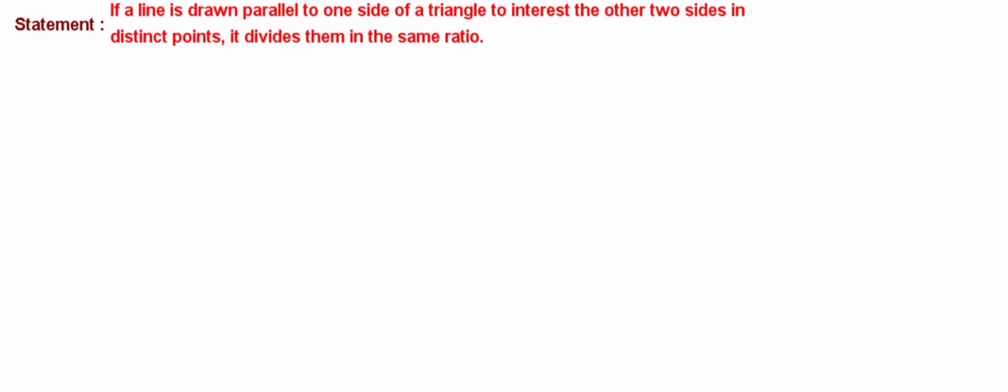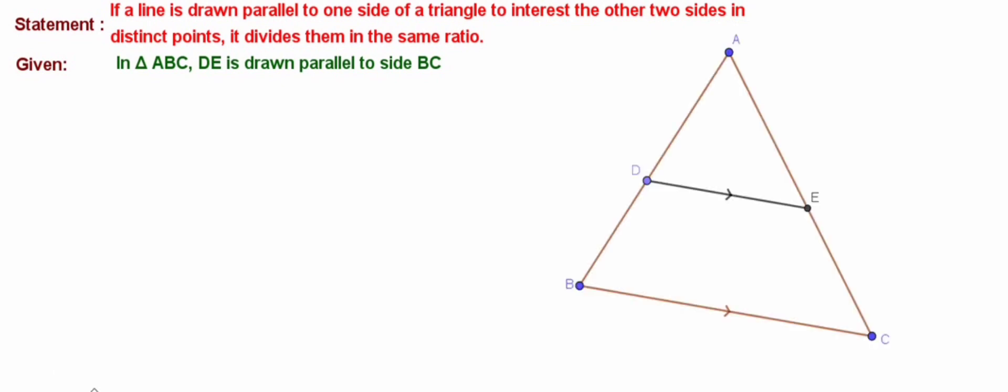What is given here? A triangle ABC and DE is drawn parallel to BC in it. Here is the diagram, triangle ABC, DE drawn parallel to base BC. Now we need to prove that AD divided by DB is equal to AE by EC.